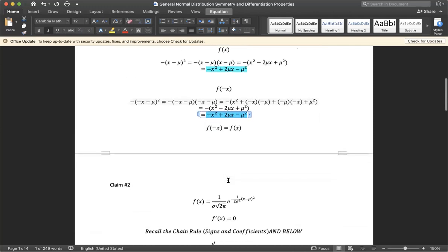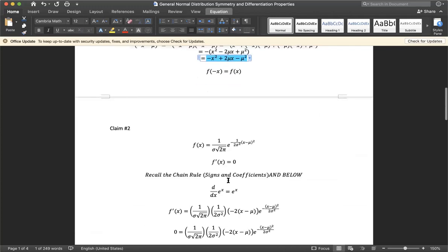In order to find the local maximum and show it as a local maximum, we have to find the first derivative of this function and set it equal to zero. You need to recall the chain rule, which is the differentiation rule for composite functions, and the derivative of a natural exponential function, which is simply itself.